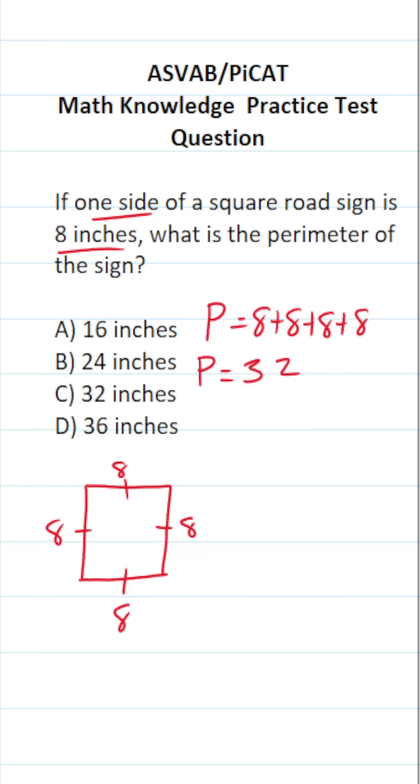So the perimeter of this square road sign that has a side length of 8 inches is going to be C, 32 inches.